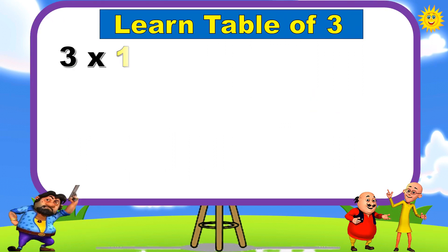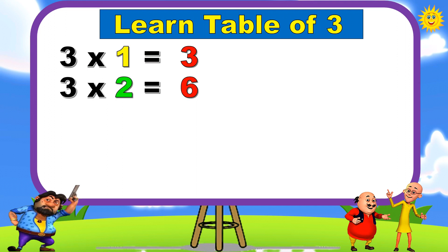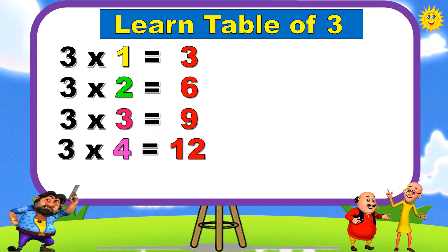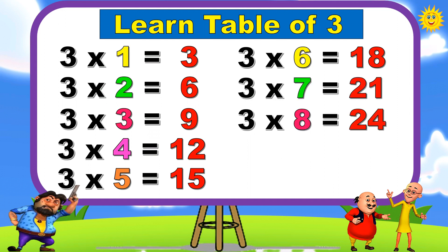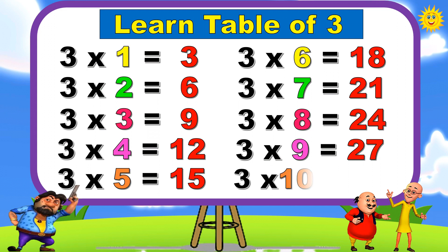3, 1 are 3. 3, 2 are 6. 3, 3 are 9. 3, 4 are 12. 3, 5 are 15. 3, 6 are 18. 3, 7 are 21. 3, 8 are 24. 3, 9 are 27. 3, 10 are 30.